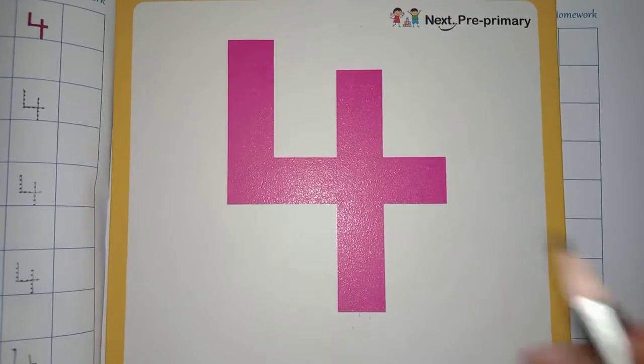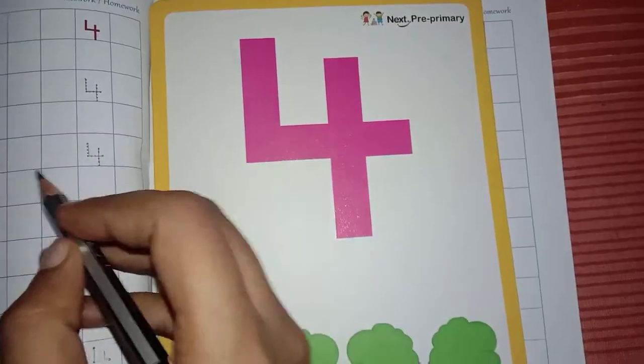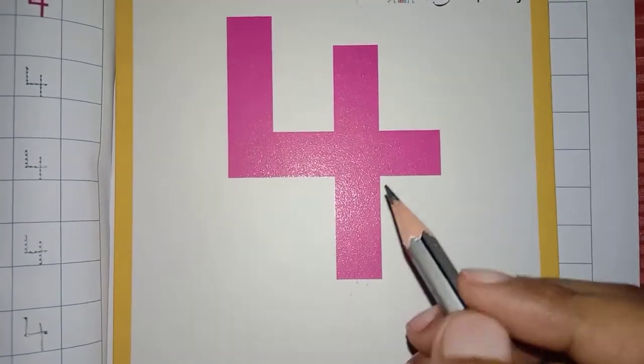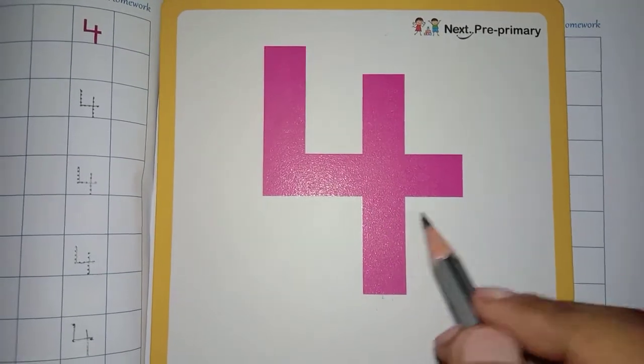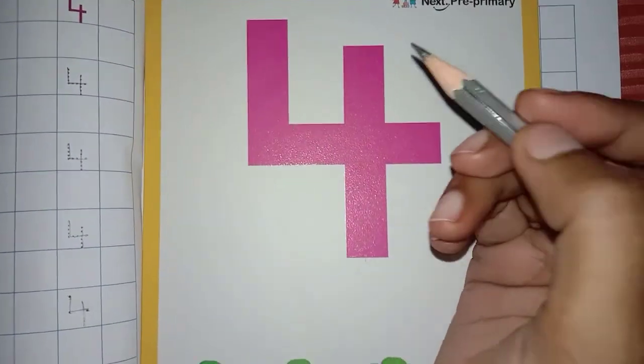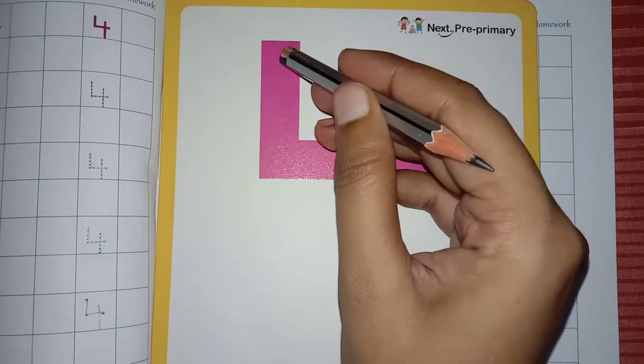Some students have done a little bit of mistakes in the formation of 4. So, I would like to consider those mistakes in this video so that you can avoid those mistakes. So, what is the formation of 4? See, very carefully, okay?